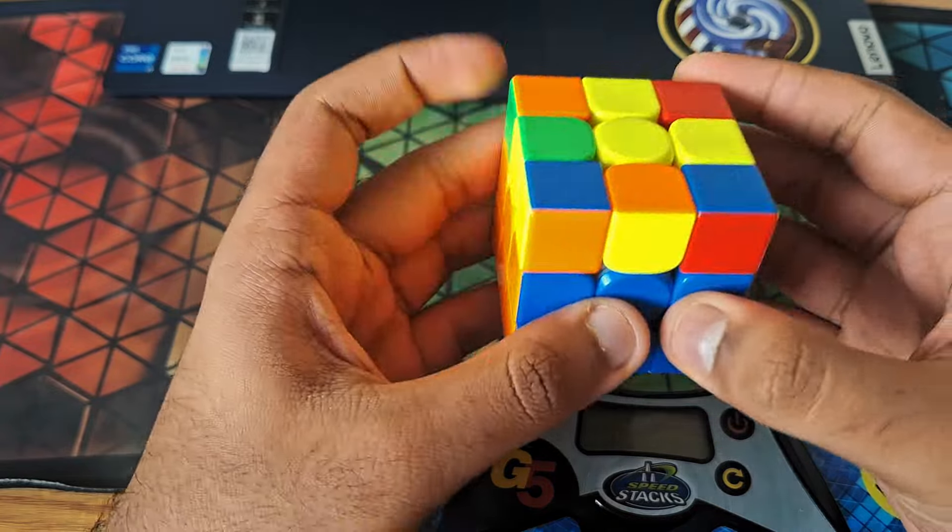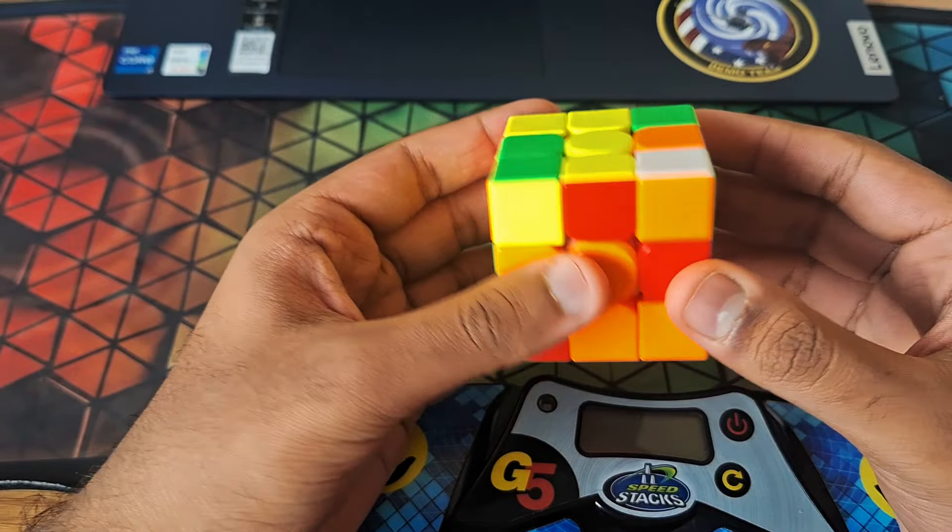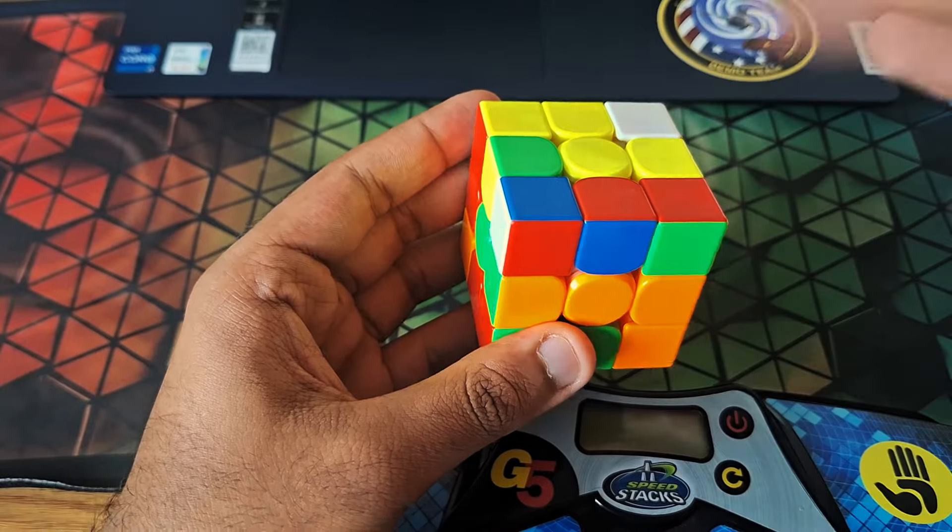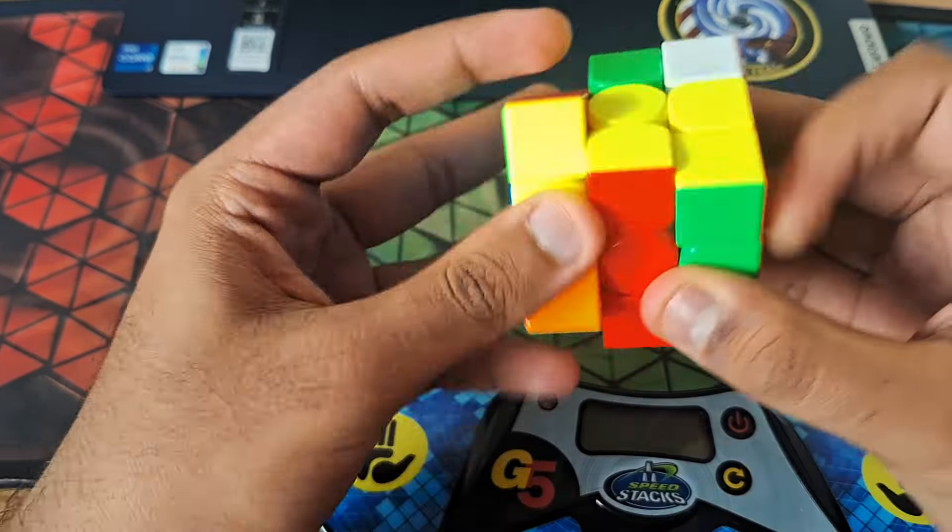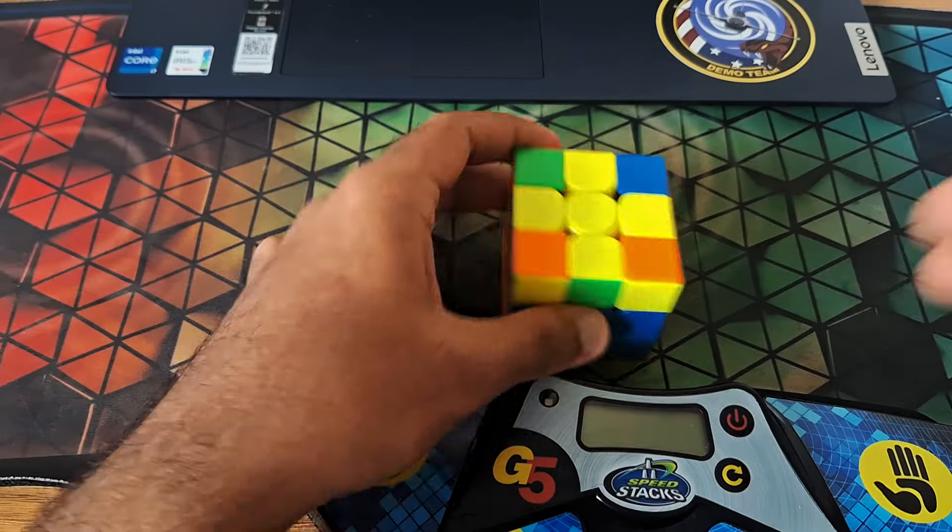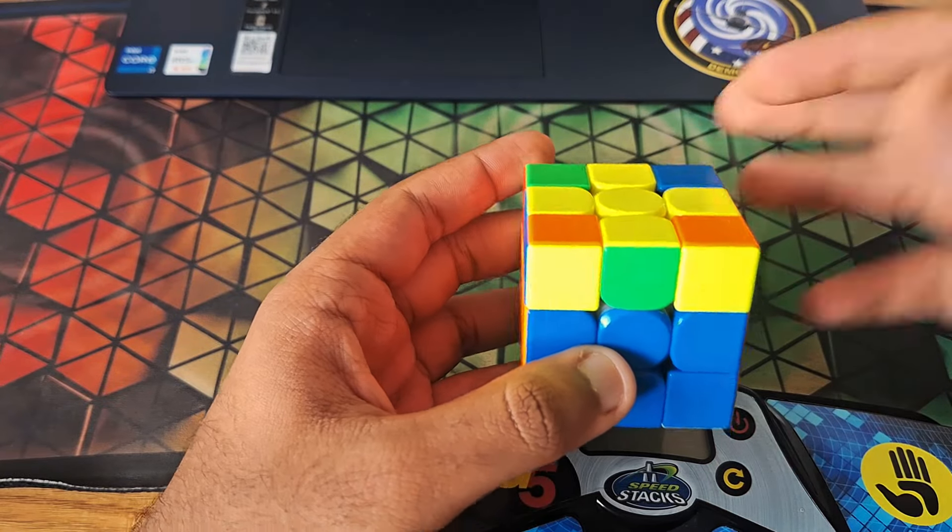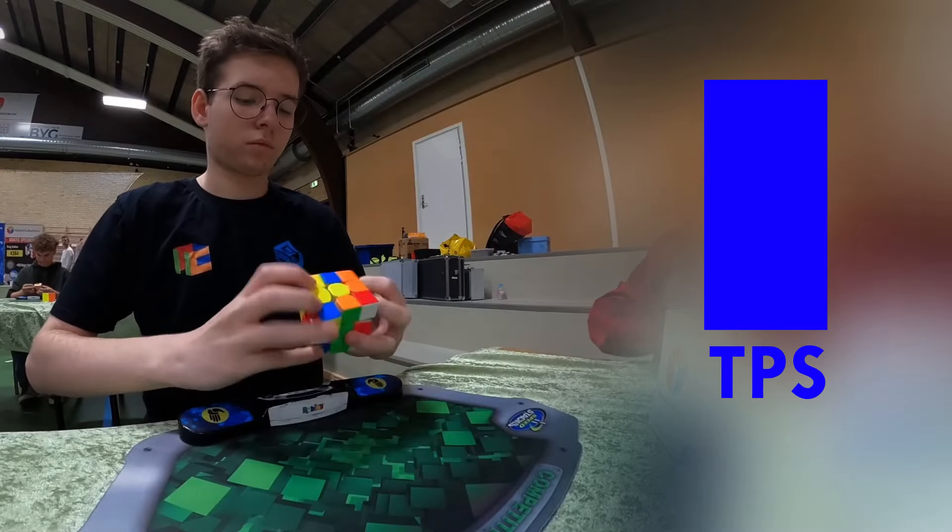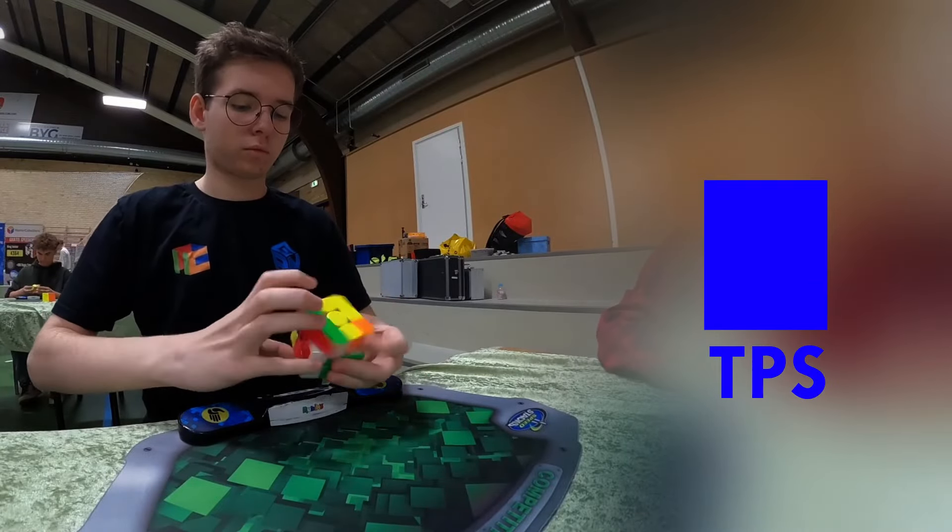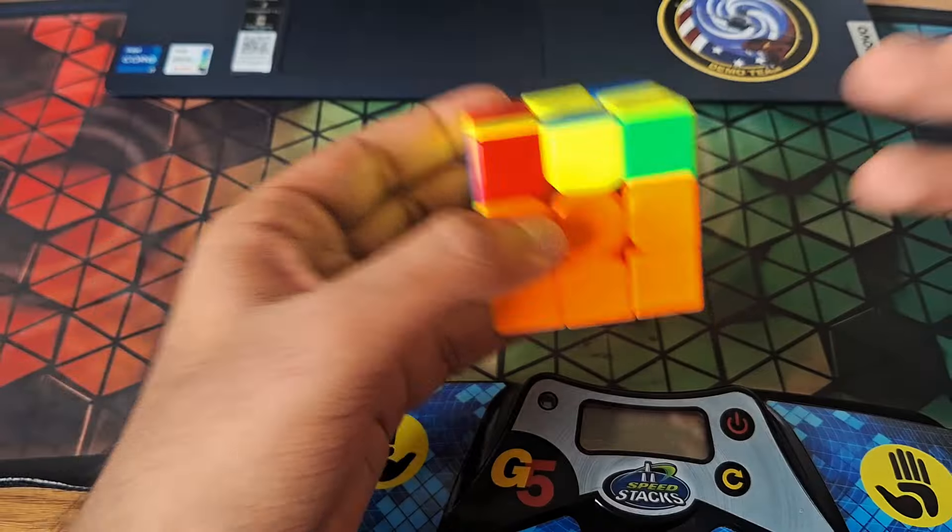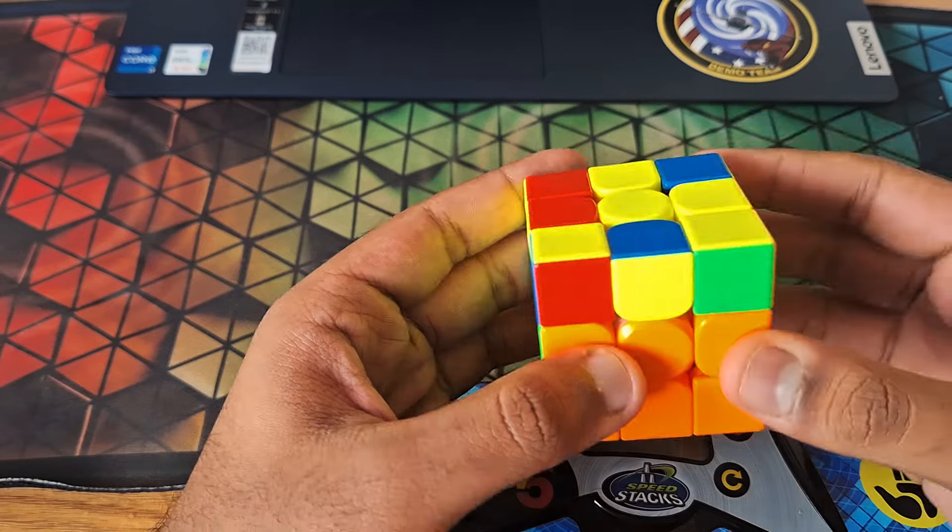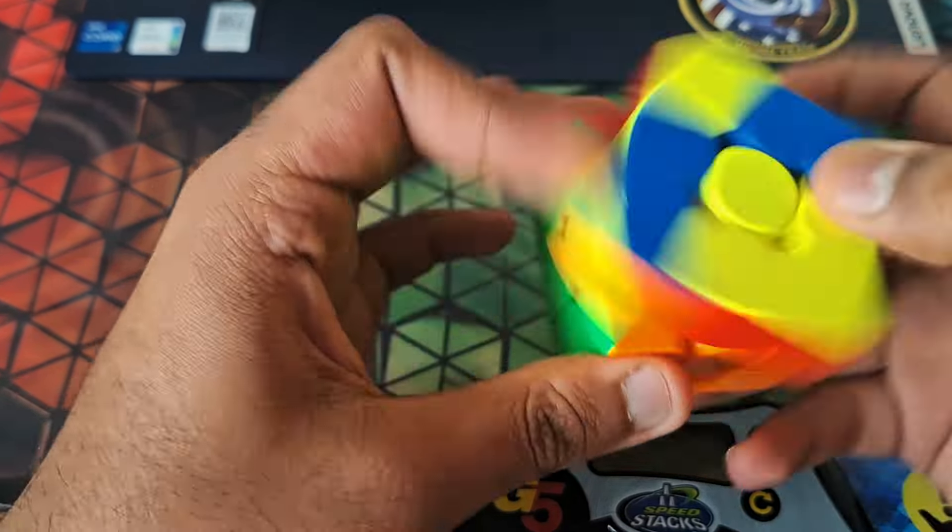If you aren't looking ahead to your next pair, then your brain will just be doing these three steps one after the other. But if you are using look ahead, then some overlap will happen. While doing step 3 for your current pair, you will also be doing step 1 for your next pair, and so on. But something that is often neglected is doing step 2 for your next pair as well. You should not only visualize the position of the next pair, but also the moves necessary to solve it.